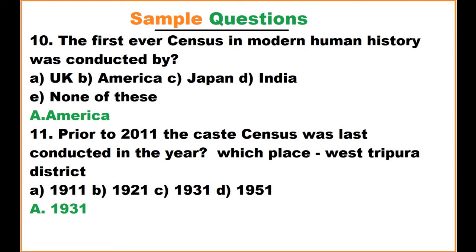The first ever census in modern human history was conducted by which country? The options are UK, America, Japan, and India. The answer is America.